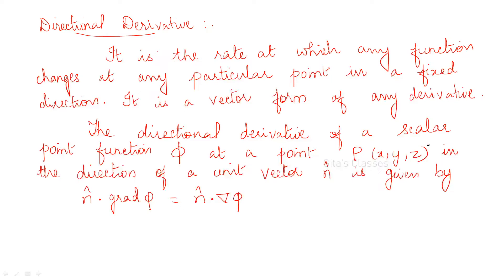Now let us see directional derivative. By definition, it is the rate at which any function changes at any particular point in a fixed direction. It is a vector form of any derivative. For a scalar point function phi at a particular point in the direction of unit vector n_cap, the formula is n_cap dot grad phi, that is n_cap dot del phi.